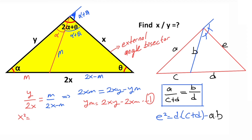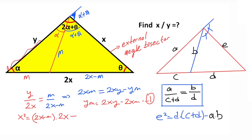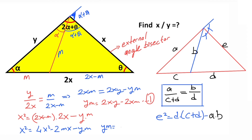Now applying the square formula: x squared equals (2x minus m) times 2x minus y times m. Distributing gives x squared equals 4x squared minus 2mx minus ym. Therefore ym = 3x squared minus 2mx. This is our second equation.